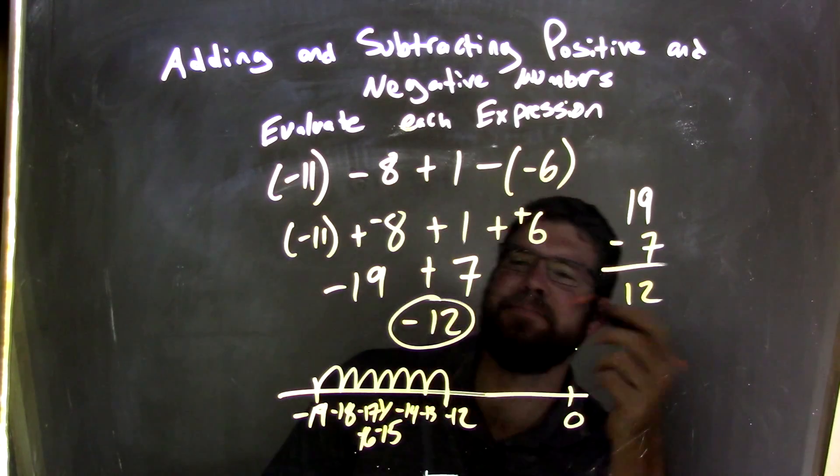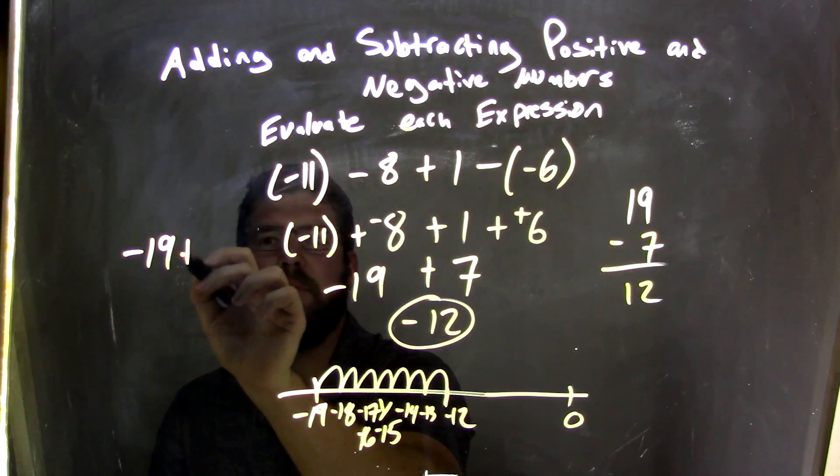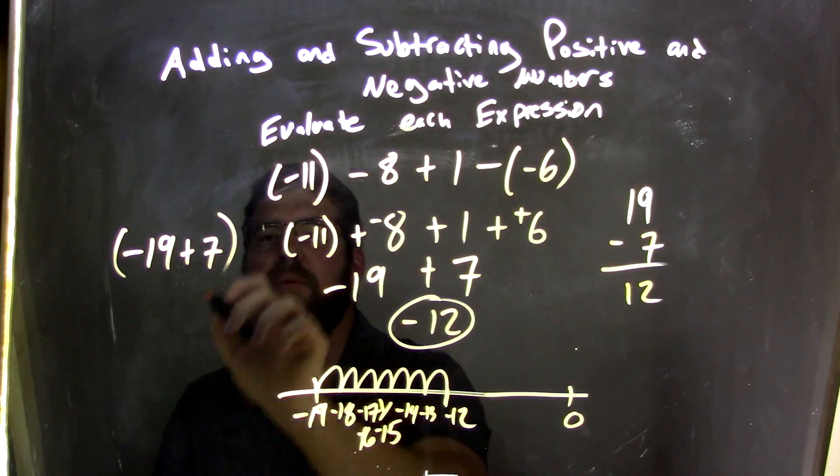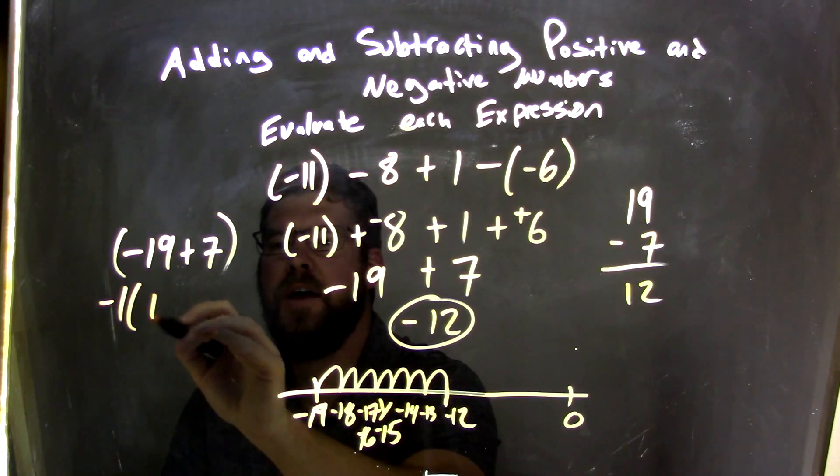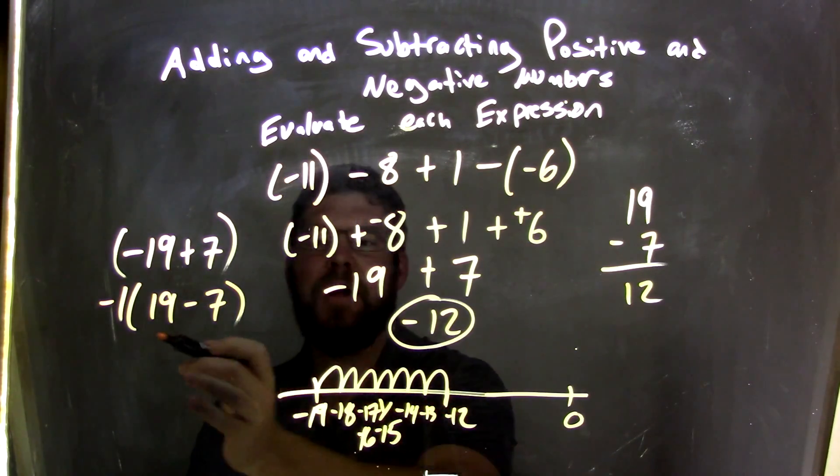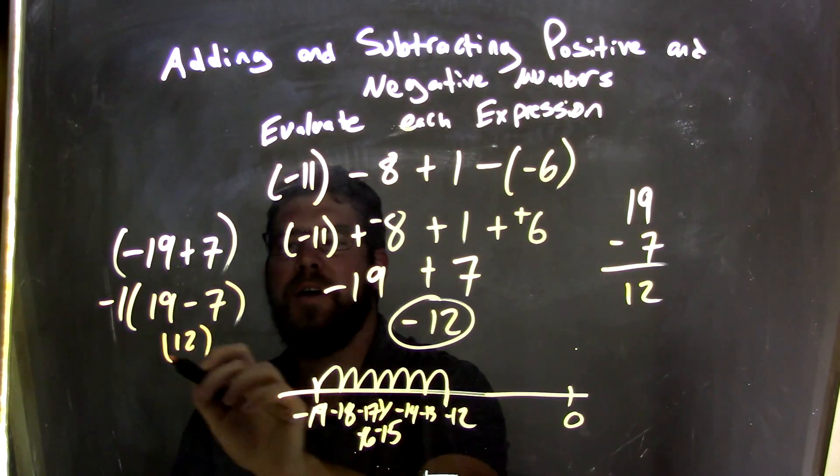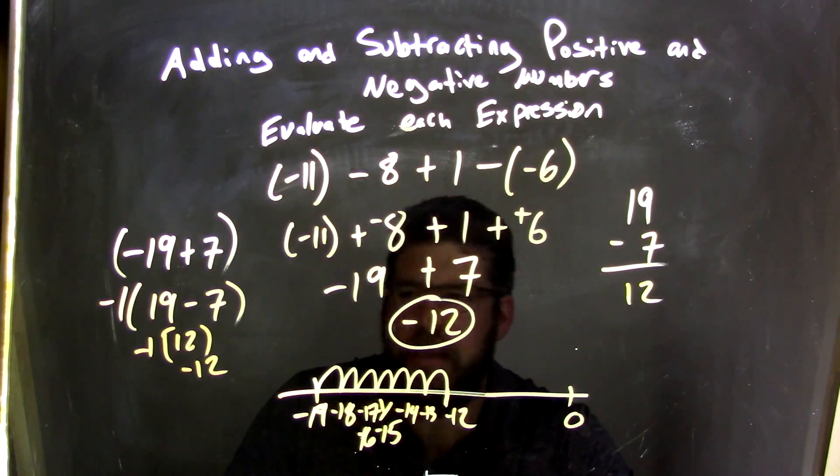We can actually see that if you write it like this, it's a little too much, but negative 19 plus 7 like that, if I pull out a negative 1 from both parts, now we have 19 minus 7 on the inside and negative 1 on the outside. So 19 minus 7 came out to be that 12, and then negative 1 multiplied in on the inside makes it negative 12. That's another way to look at it.